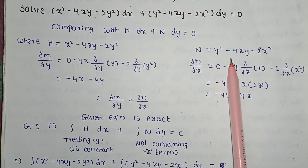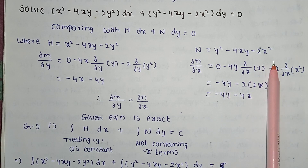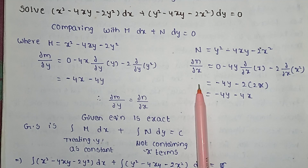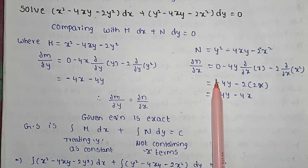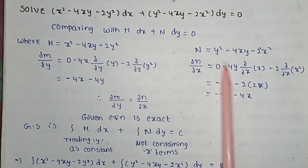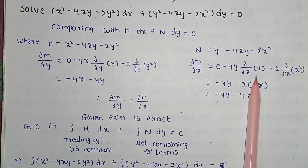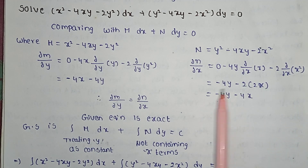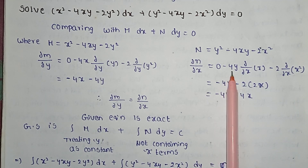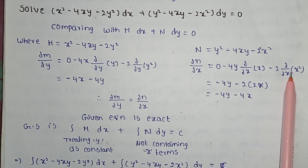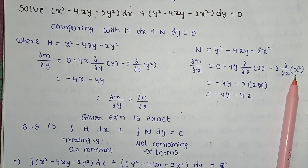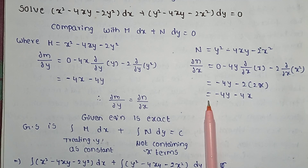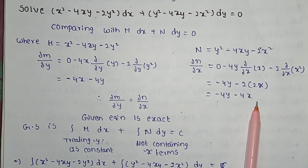N is equal to y² - 4xy - 2x². Now ∂N/∂x — differentiating with respect to x, keeping y as constant: 0 minus 4y · ∂/∂x(x) minus 2 · ∂/∂x(x²) equals minus 4y minus 4x.